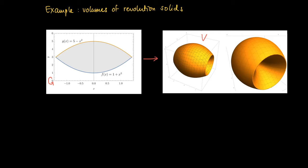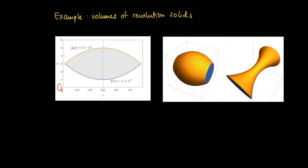One solid is obtained by rotating the graph of g from minus 2 to 2 about the x-axis, and the other is the revolution solid obtained by rotating the graph of f about the x-axis. So what we get by rotating the gray area about the x-axis is a volume which is the difference of the following two solids: the solid from rotating g and the solid from rotating f.